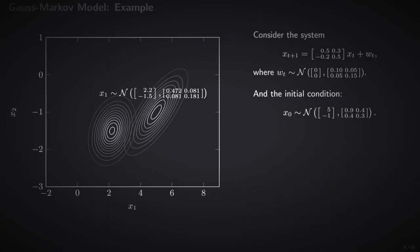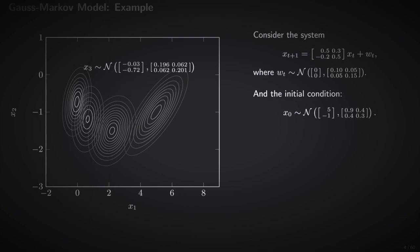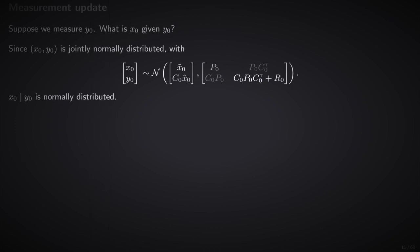Hello again and welcome to this third video lecture on the Kalman filter. We started this discussion by presenting the Gauss-Markov model, where we studied how the state, as a random variable, evolves in time. Then we derived the equations of the Kalman filter. We started by observing that the pair x0, y0 is jointly normally distributed.